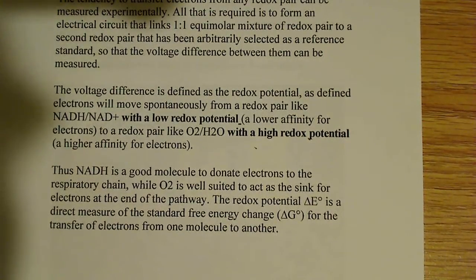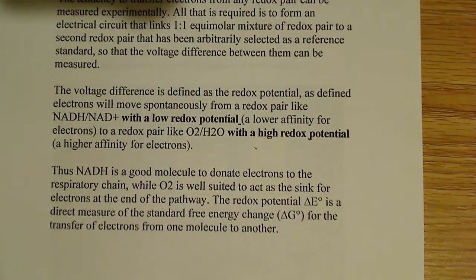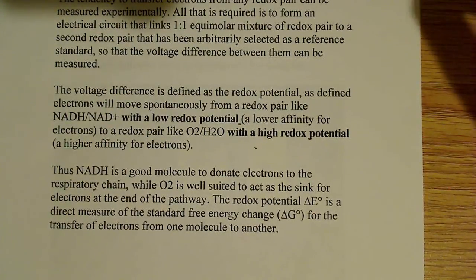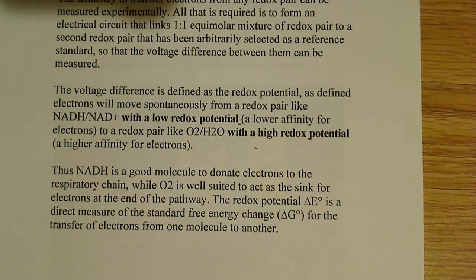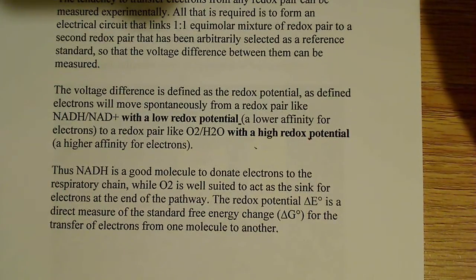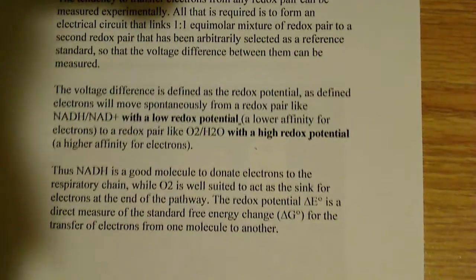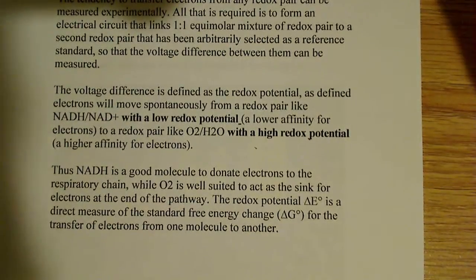Oxygen would have a positive redox potential. NADH is very good at giving up electrons, while O2 is very good at taking and holding on to the electrons. This makes intuitive sense, because if you think about the entire electron transport chain, NADH is one of the first molecules to give up its electrons, as well as FADH2, which also gives up its electrons to the second respiratory complex.